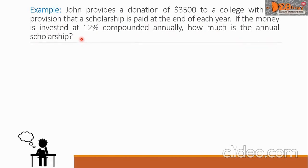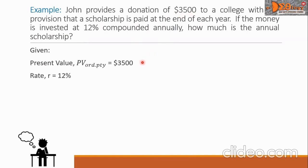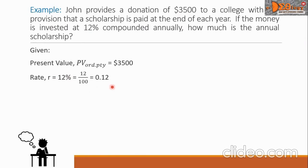Let us first write the given of the problem, starting with the present value, PV, which is $3,500. Next is the rate, denoted by R, and it is 12%. Let us convert this 12% into decimal by dropping the percent sign and dividing 12 by 100, which gives us 0.12. Next is the number of periods — it says compounded annually, so N equals 1.